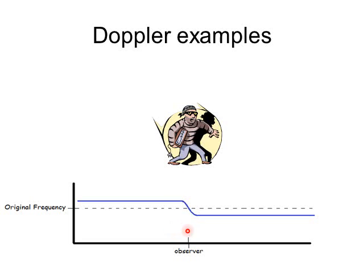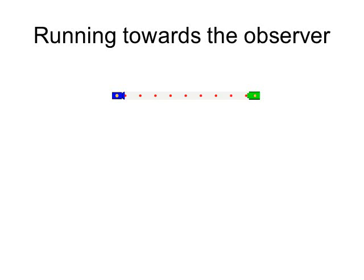Here is a graph of what this might look like. The observer is at this location, and the original frequency — as if the car were standing still — would be at this level. As the source travels toward the observer, the observed frequency (the blue line) is higher than the actual emitted frequency, and then as soon as it passes, the observed frequency becomes lower.